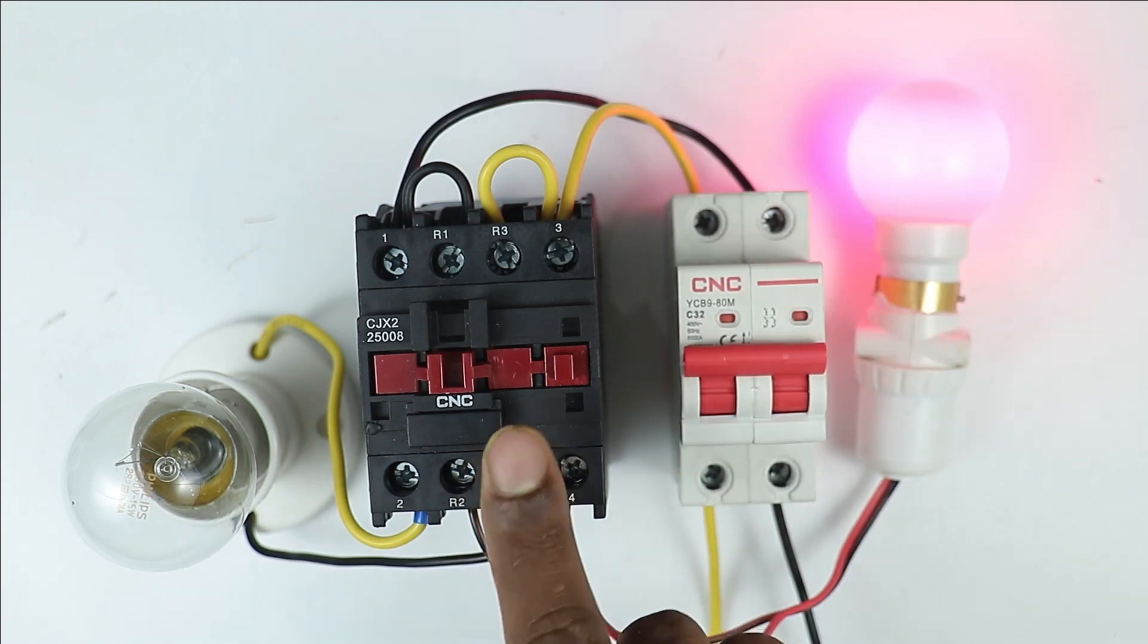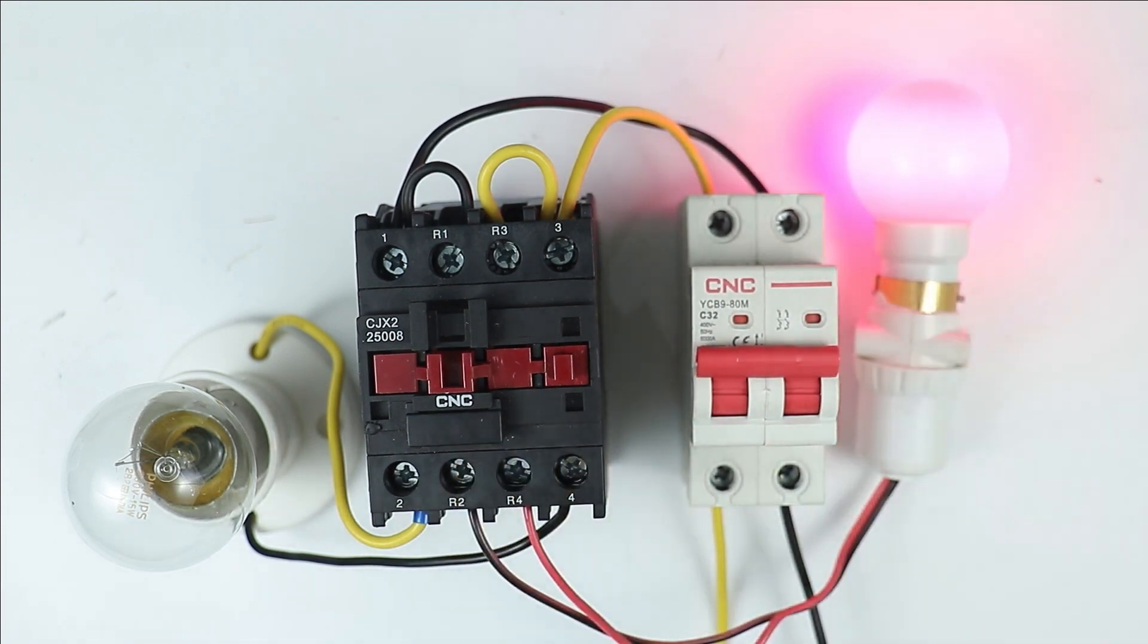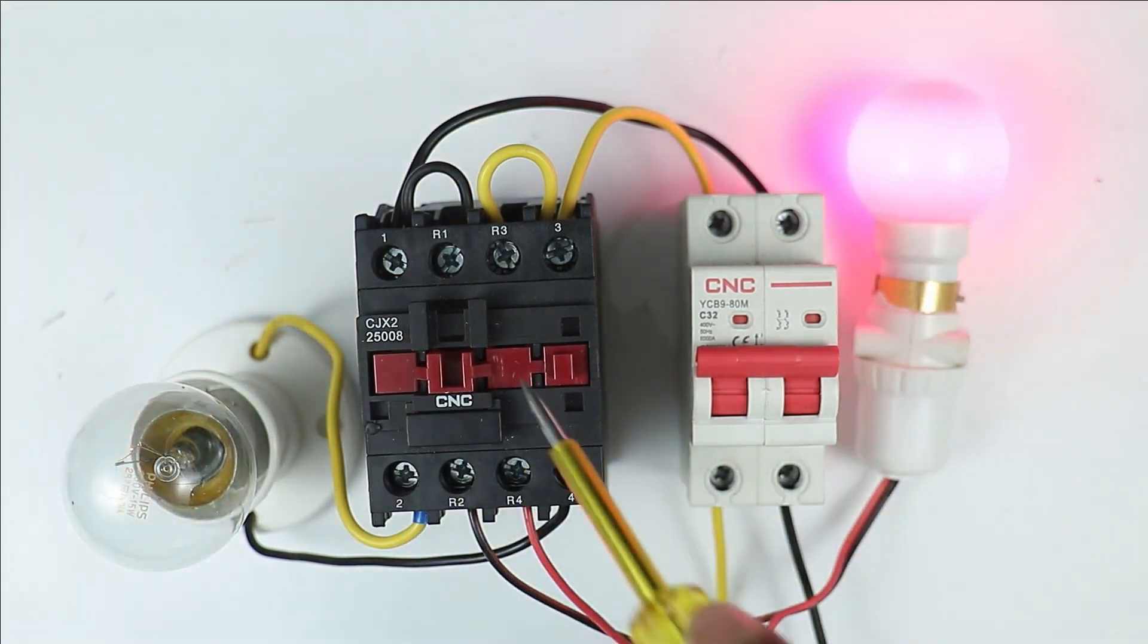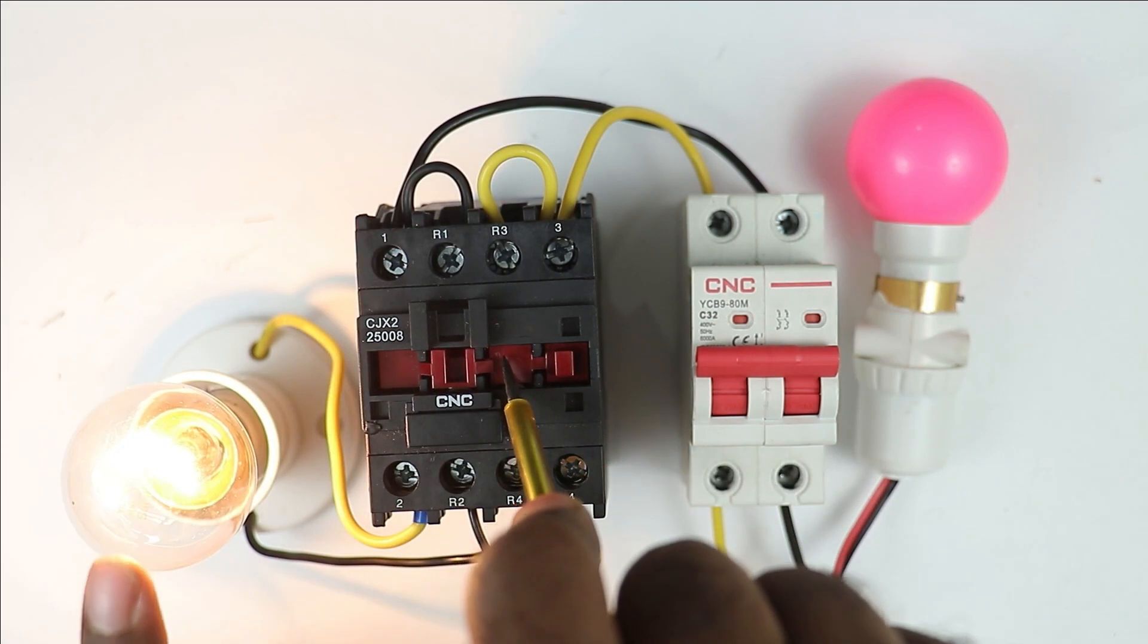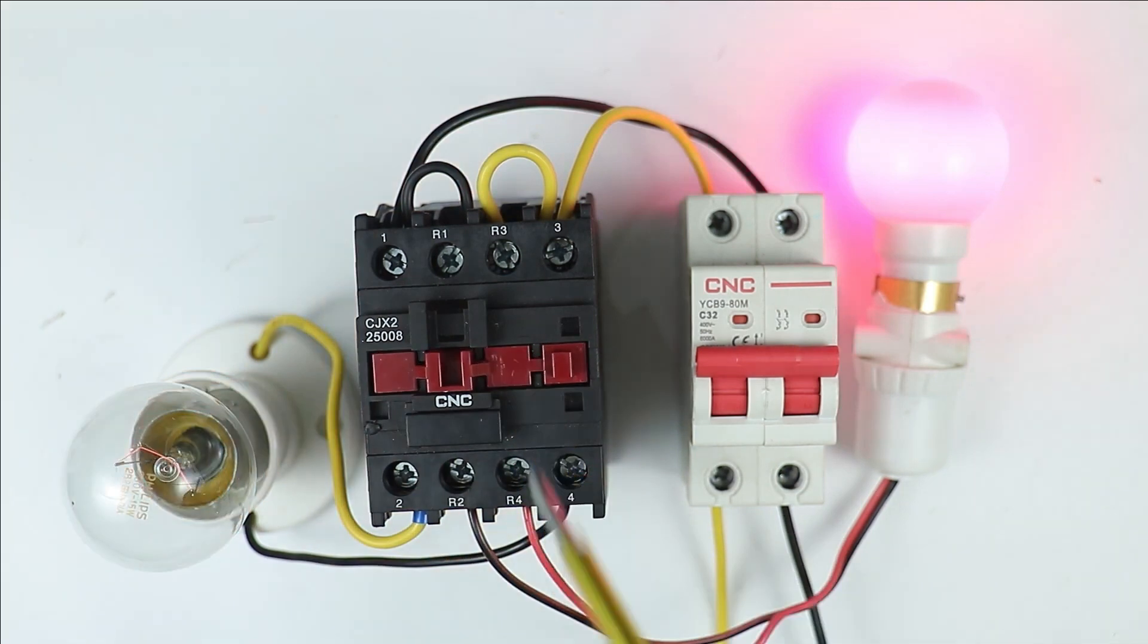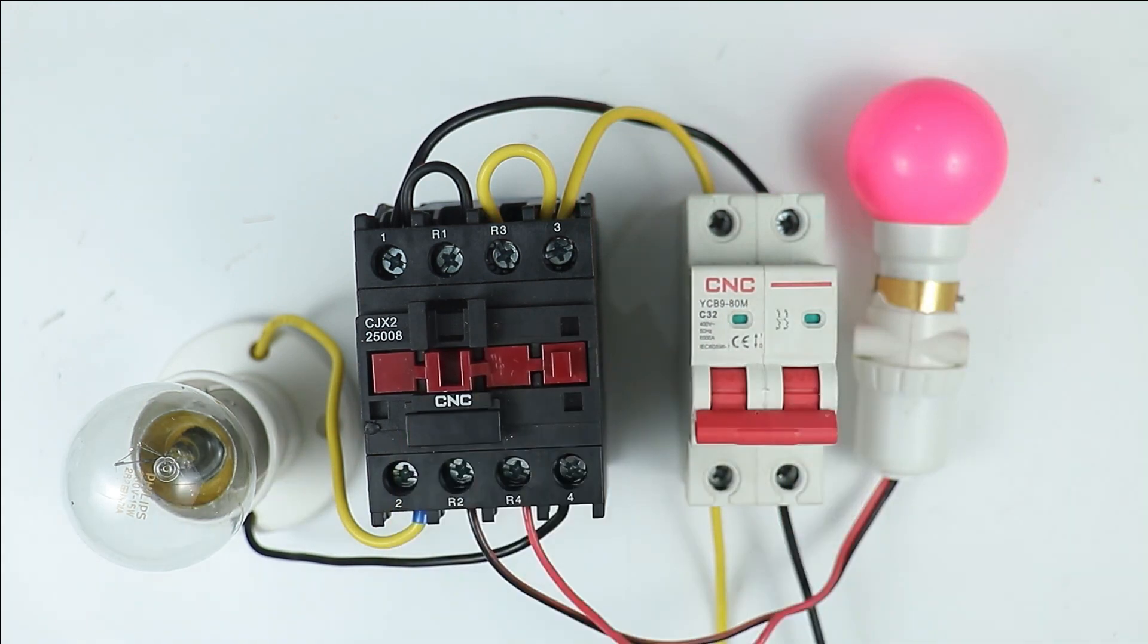If I keep this contactor in off position, then our night lamp will glow. But when your contactor turns on, the night lamp goes off and this main lamp will turn on. Simple logic is applied here. When contactor turns on, main light will be on. When contactor turns off, night lamp will glow. Now how this contactor gets turned on, let's understand.